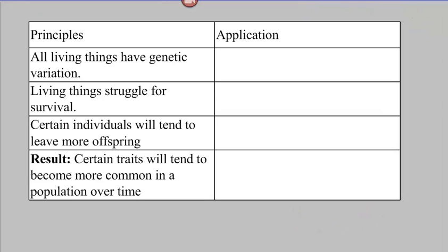In your assessments on natural selection, you'll essentially be asked to apply the principles to a case study. Here are our four principles: that all living things have variation, that they struggle, that certain individuals leave more offspring, and then the end result that certain traits become more common. Try to apply these principles to the case of the katydids: How would you explain how katydids have genetic variation? How do they struggle for survival? Which katydids produced more offspring and why? And what is the end result? Pause the video now, answer those questions, and then we'll come back to the answers.